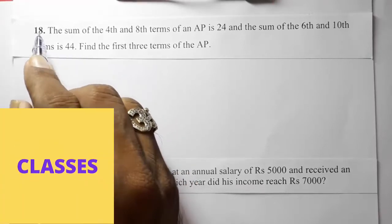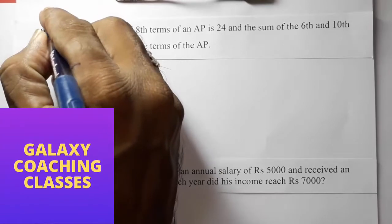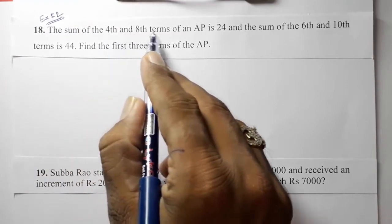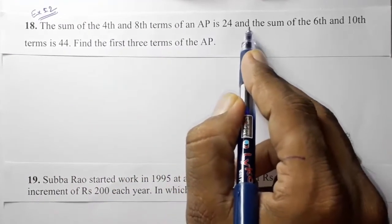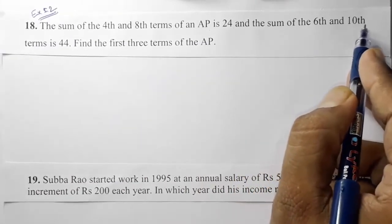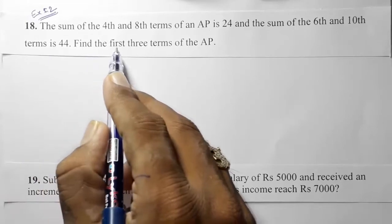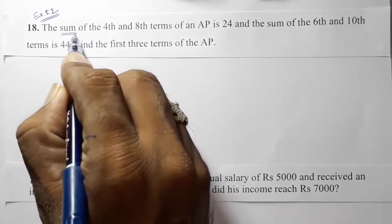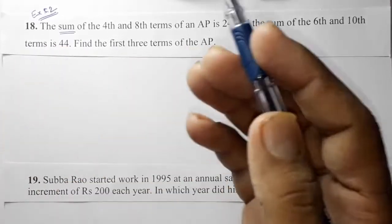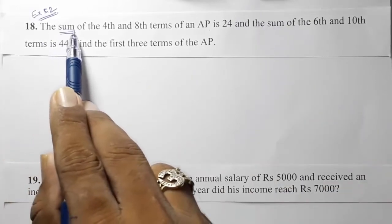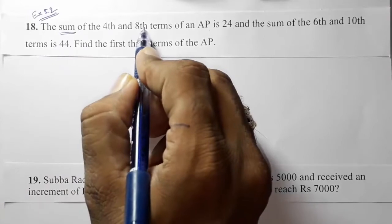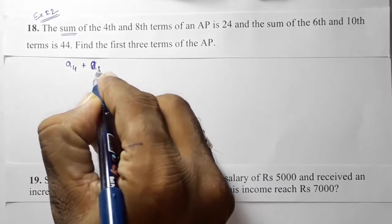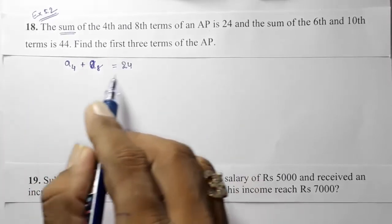Hello friends, today we are going to solve CBSE Class 10th Maths Exercise 5.2, Question 18. The sum of the 4th and 8th term of an AP is 24, and the sum of the 6th and 10th terms is 44. Find the first three terms of the AP. Generally, what students think when 'sum' is written is to use the sum formula — but here we are not going to use that. They said the sum of the 4th and 8th term, so we just add them and set that equal to 24.